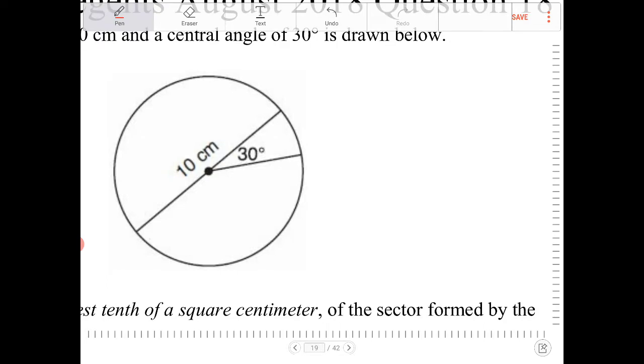So logically, the area of the sector is going to be 30 over 360th of the entire circle. Let's think about that. 30 degrees to 360. That's the fraction of the entire circle that that slice is.